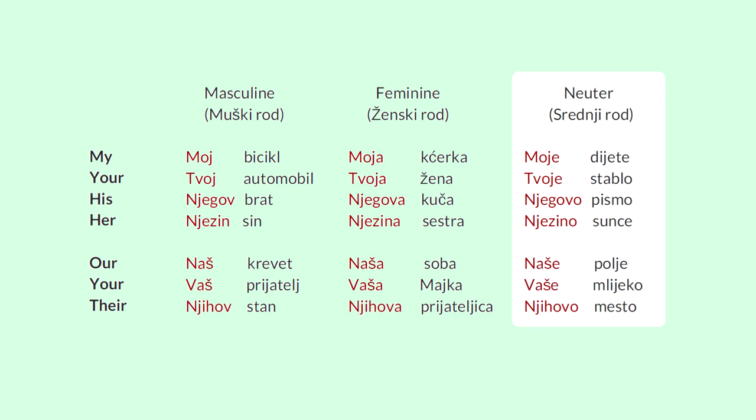Средний род. The neuter gender will be ending with either E or O. Мое дете — my kid. Твое стабло — your tree. Негово письмо — his letter, like an email. Незино солнце — her sun. Наше поле — our field. Ваше млеко — your milk. Нихово место — their place.